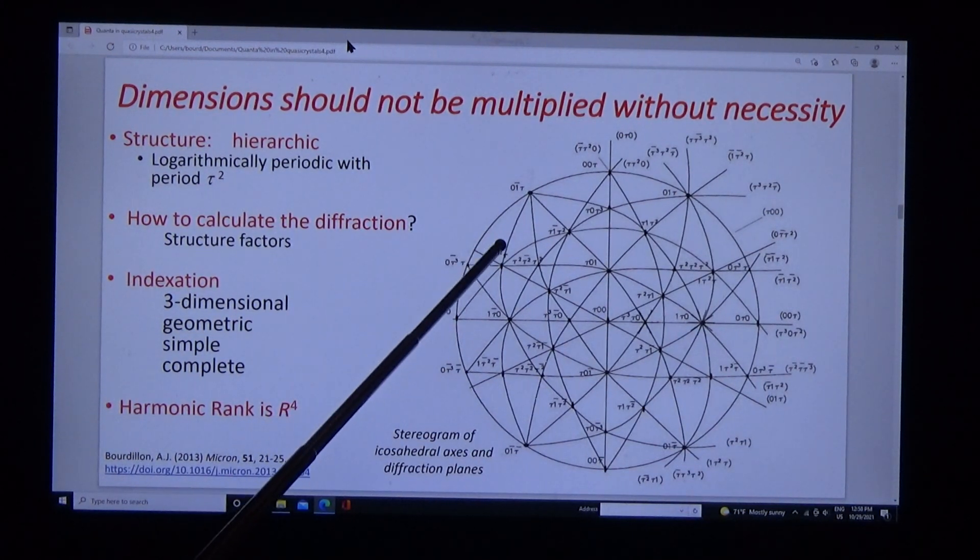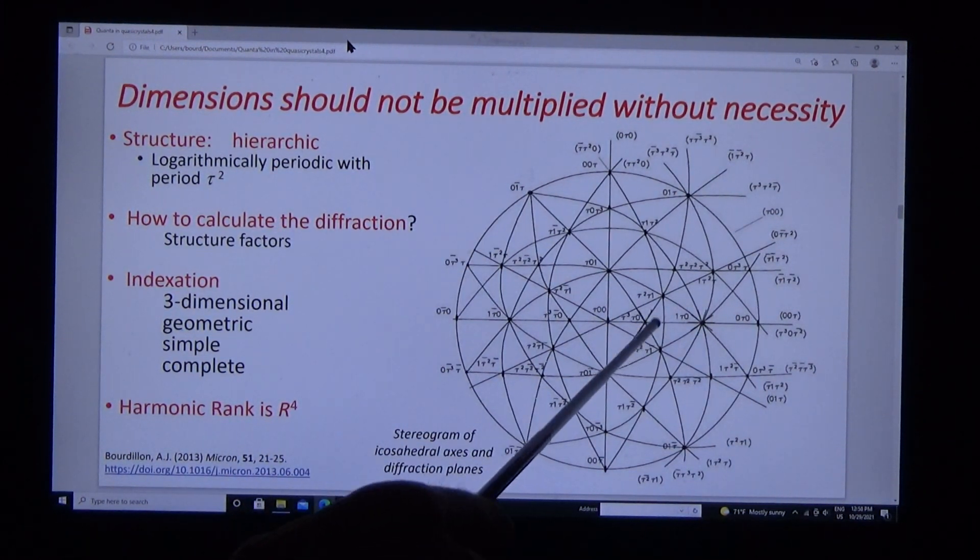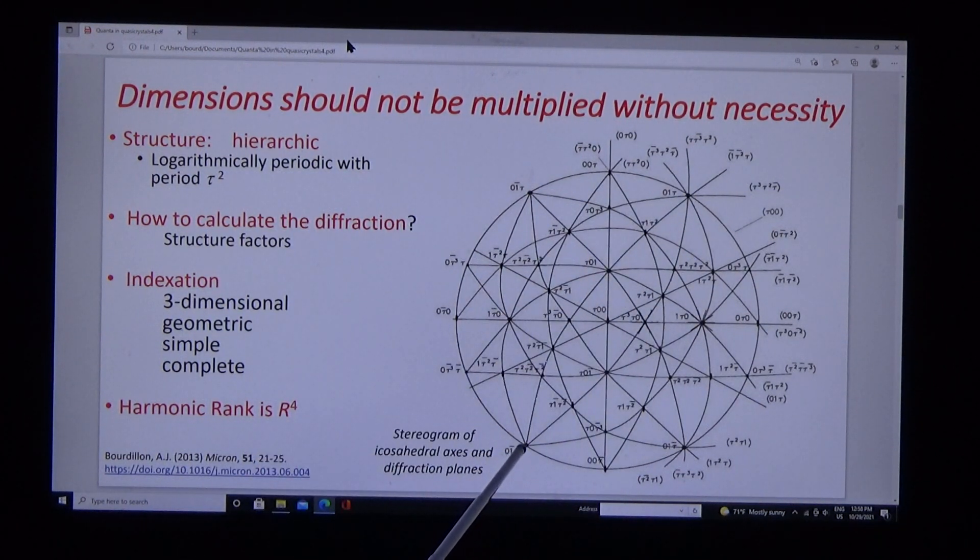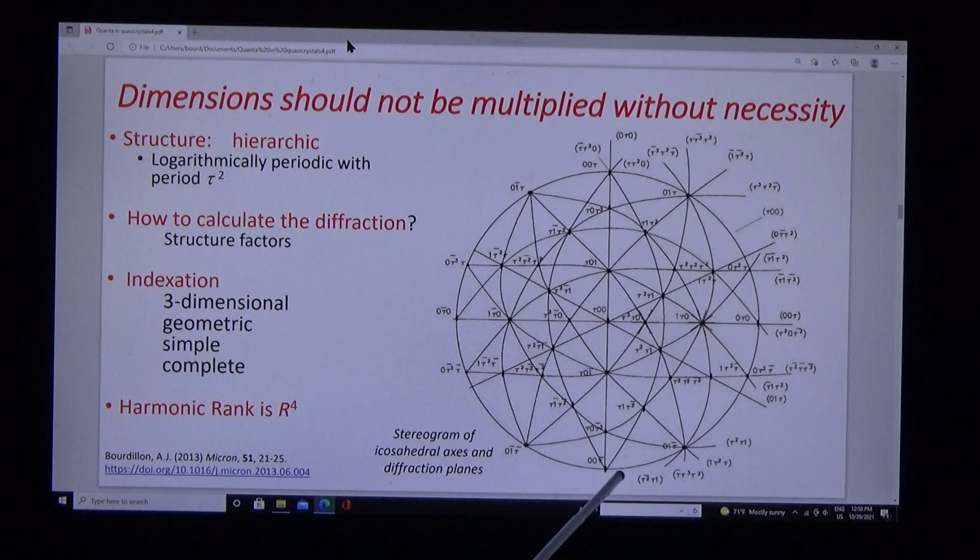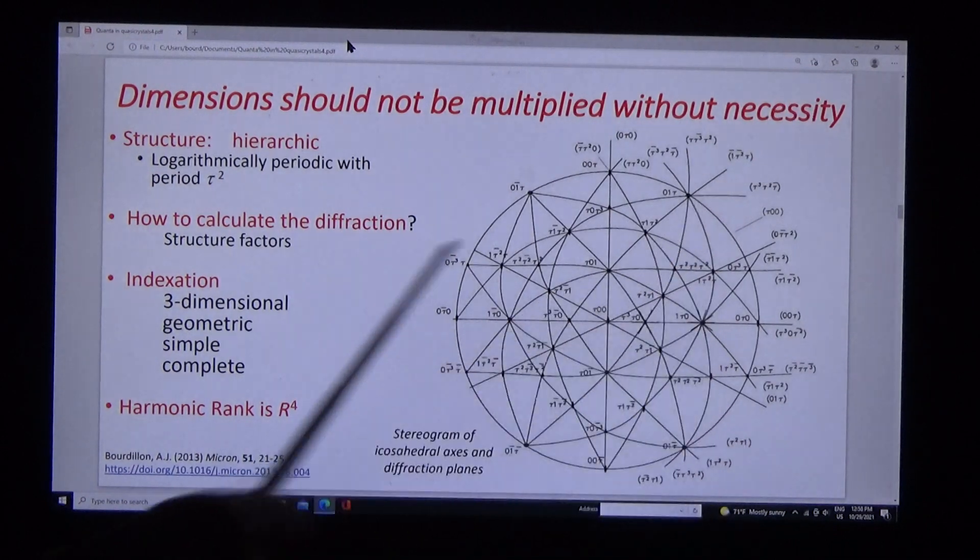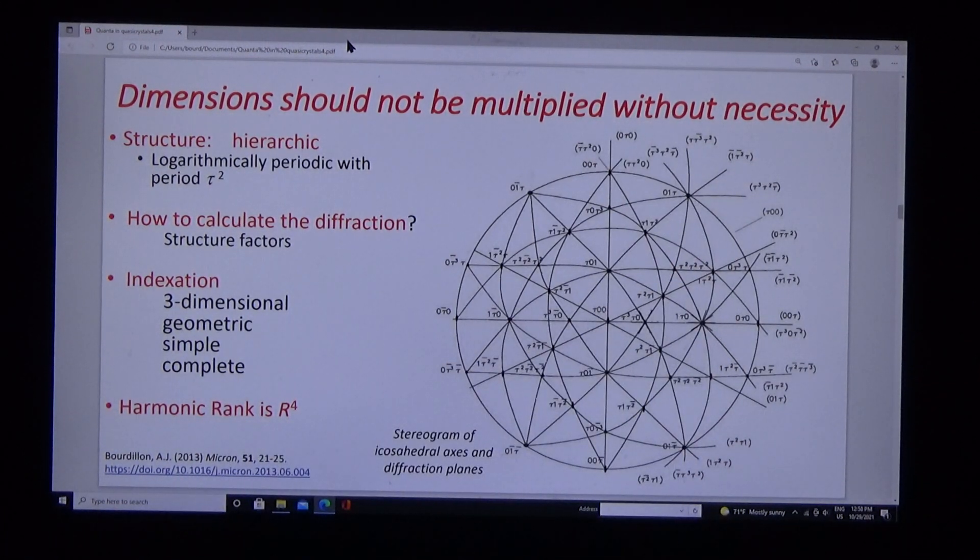Here's a stereogram of the principal axes and principal diffraction planes which are normal to the axes. They are all three-dimensional, geometric, simple and complete. Dimensions should not be multiplied without necessity. The harmonic rank is fourfold.